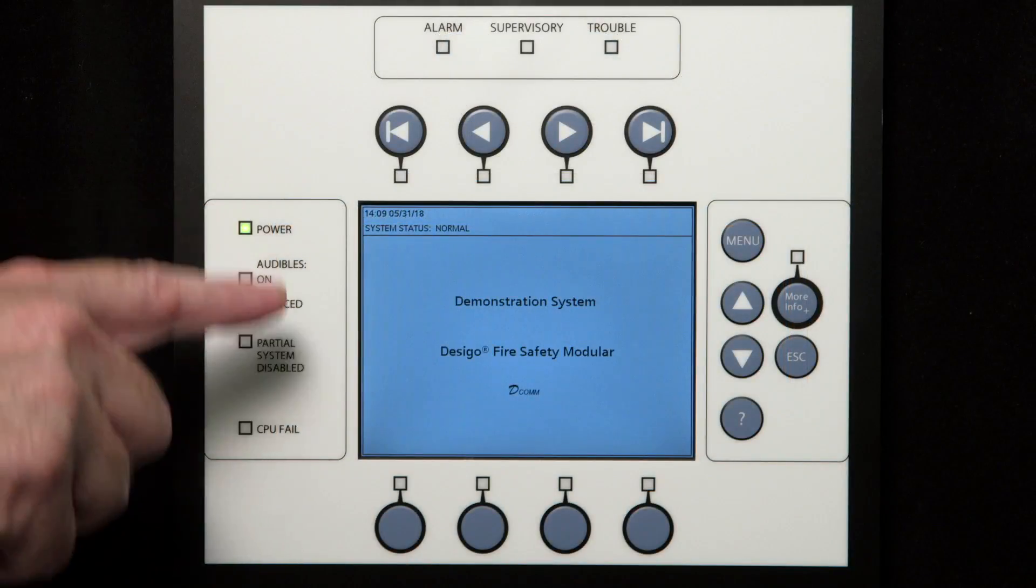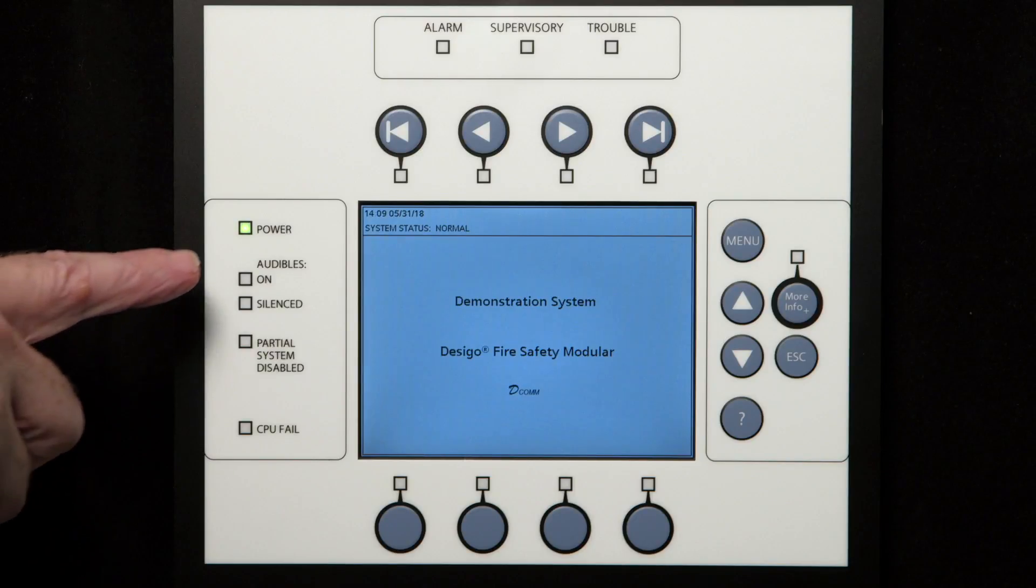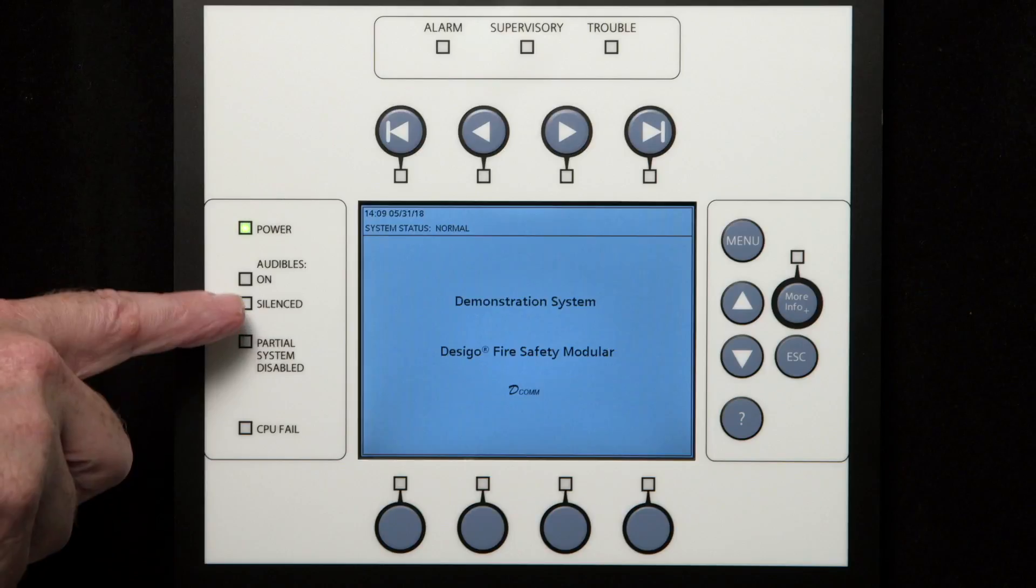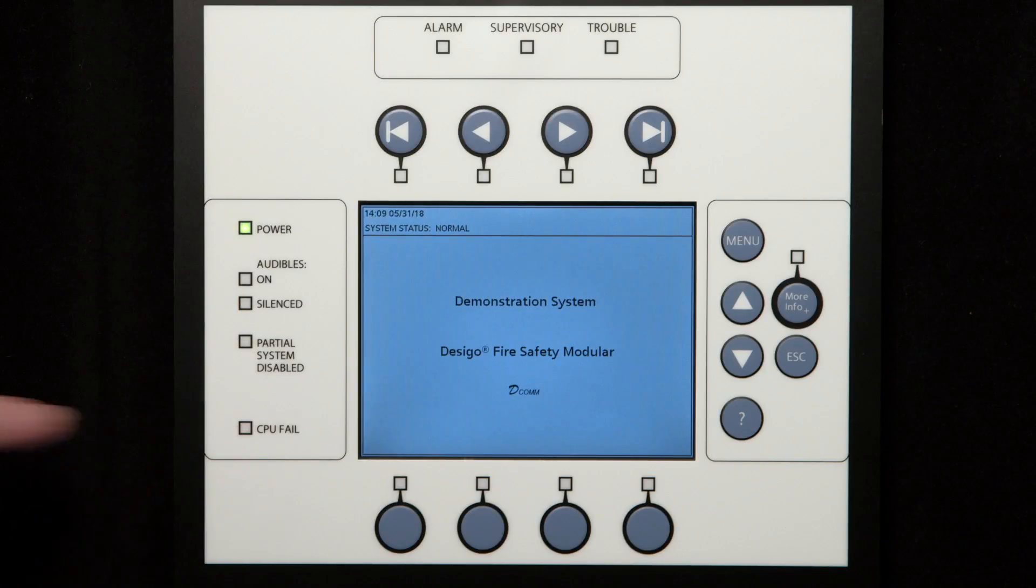The system status LEDs show basic system operation. These status lights display power, the state of the system audibles, the horns, strobes, the speakers, and if any part of the system is turned off or disabled, as well as if the main fire alarm computer is functioning properly.